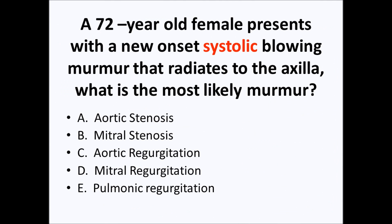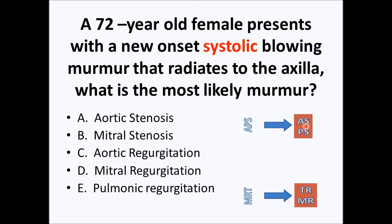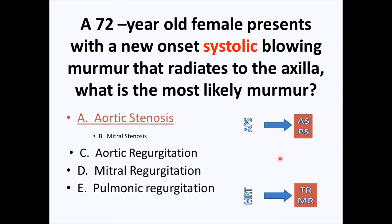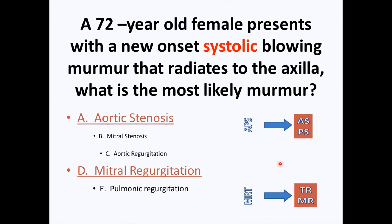Here's a practice question: a 72-year-old female presents with a new onset systolic blowing murmur that radiates to the axilla — what's the most likely murmur? Systolic is a big clue. Writing out Mr. TAPPS gives us AS, PS, TR, and MR as our systolic murmurs. Checking the answer choices: AS is there, MS is not, AR is not, MR is there, PR is not. We're already narrowed down to two answers — AS or MR.